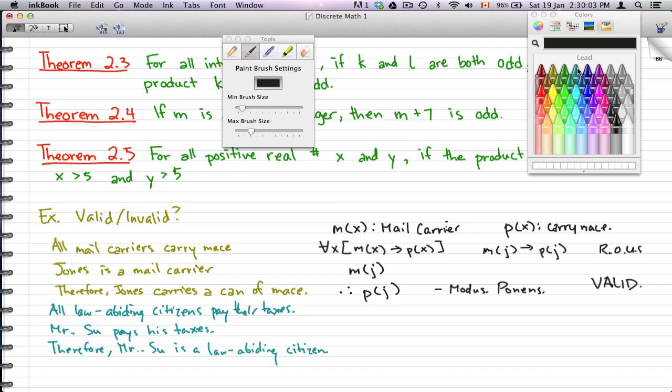So here the second one is the law-abiding citizen one. So let's have LX be law-abiding citizen and let's have TX pay their taxes. So what is set here is for all X, LX implies TX.